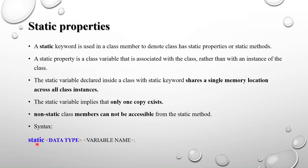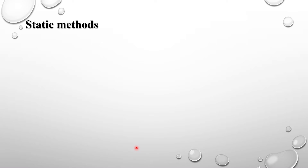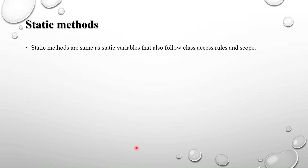The syntax for a static property is: first the static keyword, then the data type (int, logic, bit, etc.), then the variable name — for example, 'static int variable_name'. Static methods follow the same class access rules and scope as static variables.